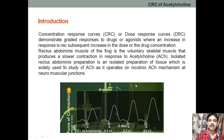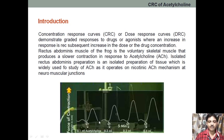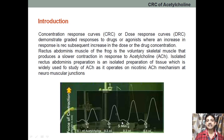If we are using a small quantity of acetylcholine, it will produce a contraction. This contraction is recorded through the graph. If we increase the concentration, again there will be an increase, and increasing the concentration means the graph height will be increasing.